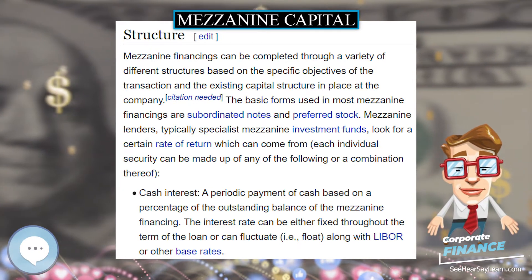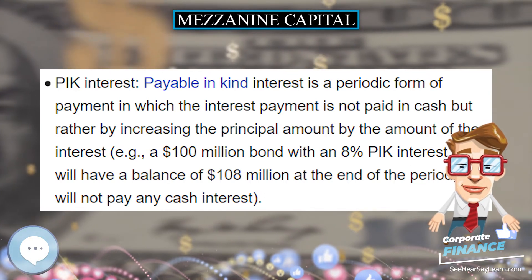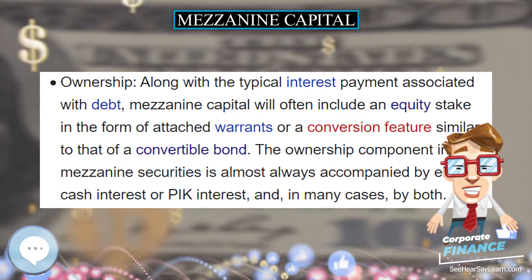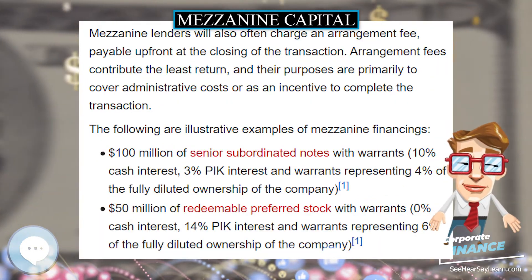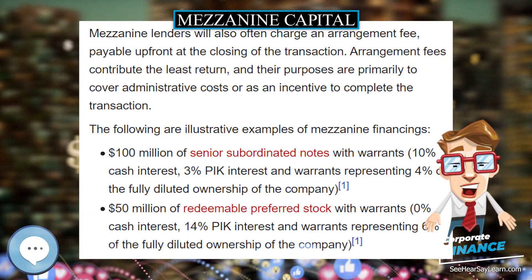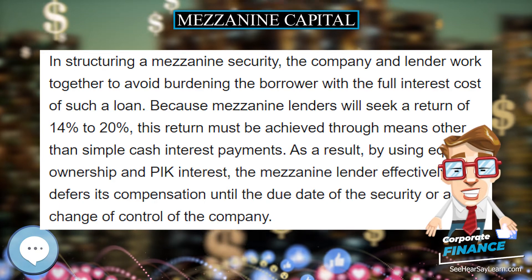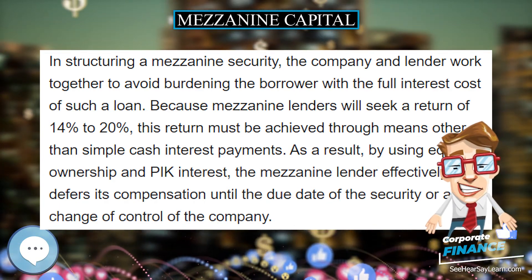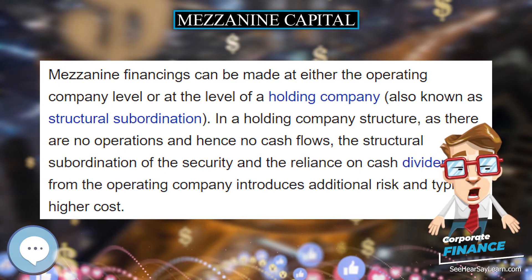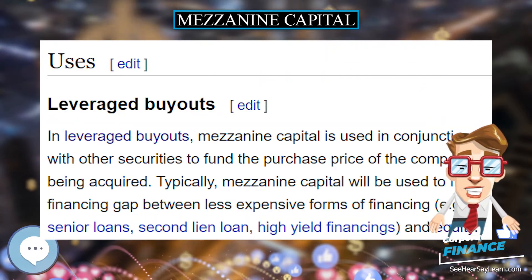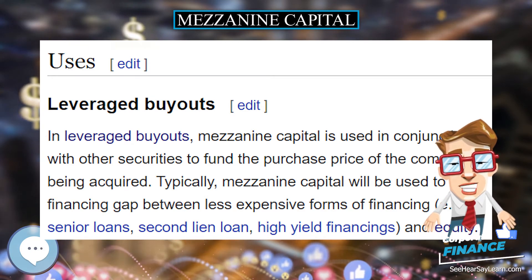Uses — Leveraged Buyouts. In leveraged buyouts, mezzanine capital is used in conjunction with other securities to fund the purchase price of the company being acquired. Typically, mezzanine capital will be used to fill a financing gap between less expensive forms of financing — for example, senior loans, second lien loans, high yield financings, and equity. Often, a financial sponsor will exhaust other sources of capital before turning to mezzanine capital.